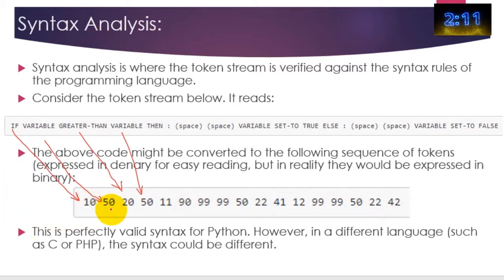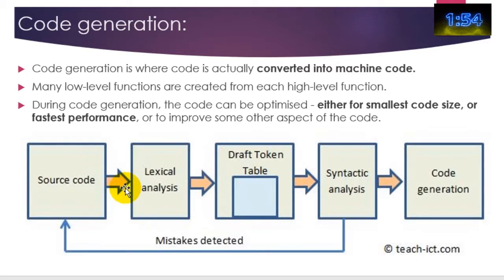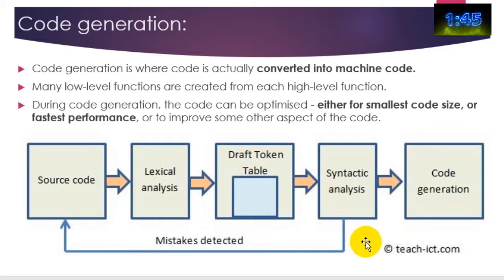So when you write an if statement, you have 'if' followed by a variable name, followed by a condition, followed by a variable name. If that wasn't in the right order, syntax analysis would say: this bit of code can't be executed because it doesn't follow syntax rules. The source code is first taken; lexical analysis is done to check the code meets the simple rules of identifying operators and variables. It then produces a draft token table, which is passed to syntax analysis to check the order of commands, and then the code is generated.